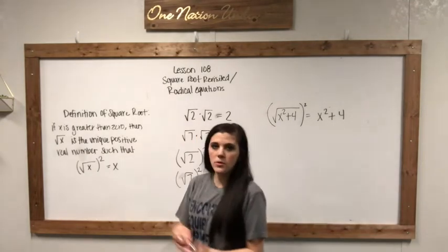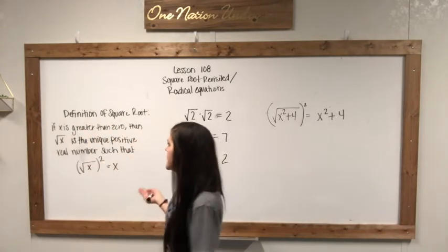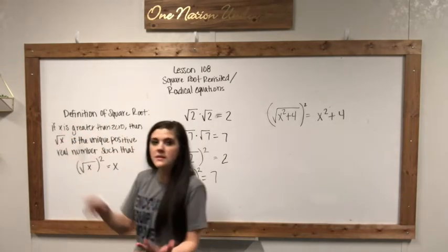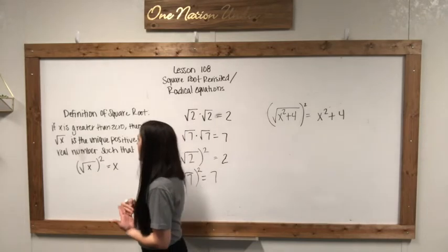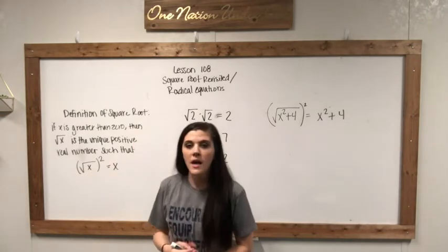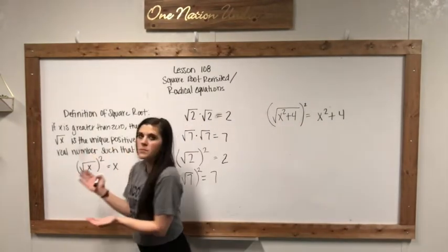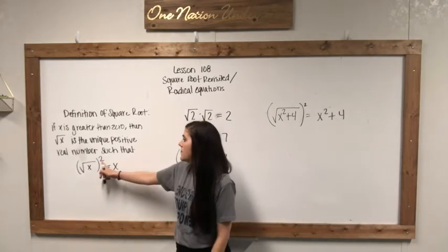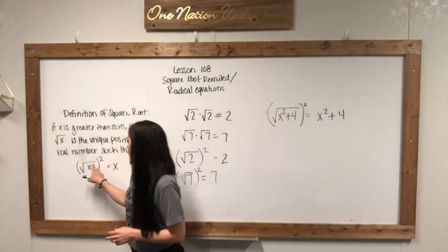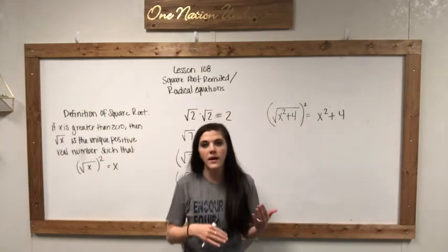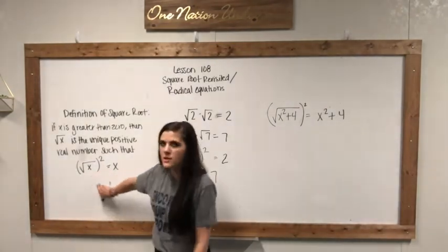So we've talked a lot about square roots this year. The definition of square root basically says that if x is greater than zero, the square root of x — if we have a square root of x and we want to solve for that x, all we have to do is multiply the whole thing to the second power. These two are going to cancel out, so the square root of something that is being squared is going to cancel out that radical sign. We're going to end up with just x.